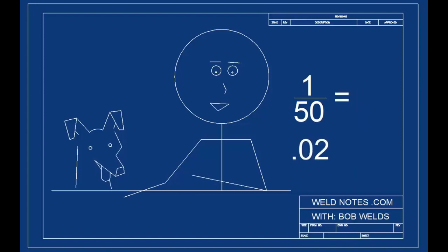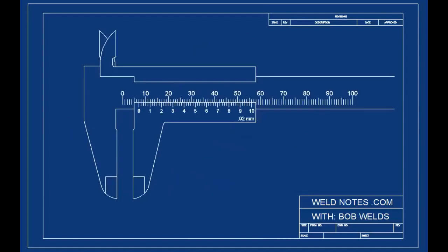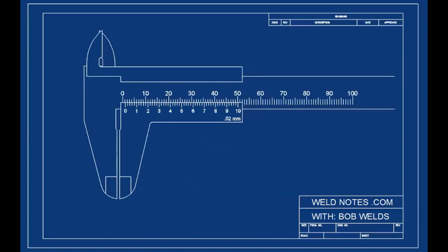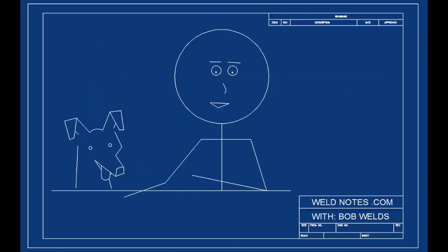See how 1 divided by 50 equals 0.02? Now, the first thing we're going to measure with our vernier caliper is nothing. That's right, we'll measure zero. It may sound like a silly thing to do, but we're going to do it for a couple of reasons. Let's do it and you'll see what I mean.